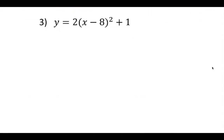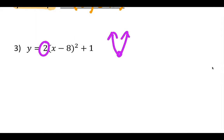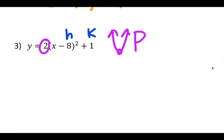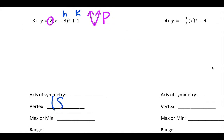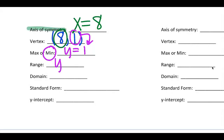Next one — notice now there is a number in front. That's okay; you can have numbers in front. It's going to change the graph, either making it stretch or compress, and we'll talk more about that later. The 2 is actually going to make it longer and skinnier. It's a positive, so I know it's facing upward. The vertex: h is going to change — it was negative 8, so now it's positive 8; k stays at positive 1. Axis of symmetry: x equals 8. It's a minimum because it's facing upward at y equals 1. Range: y is greater than or equal to 1. Domain is always, always, always all real numbers.